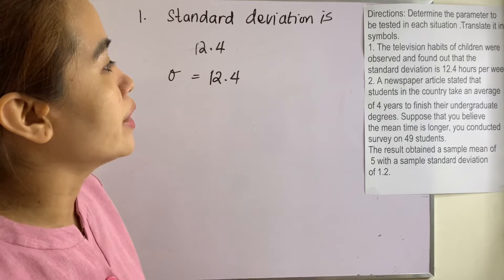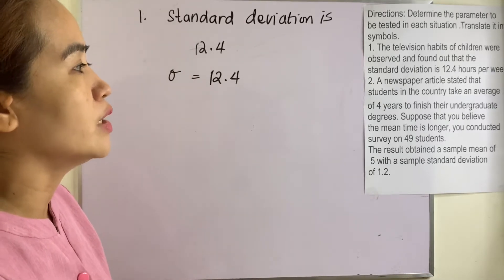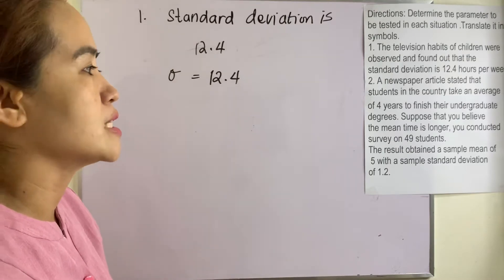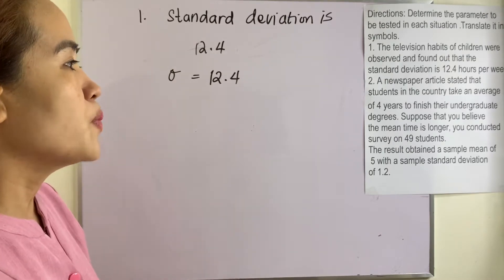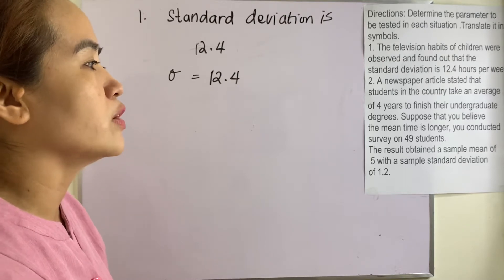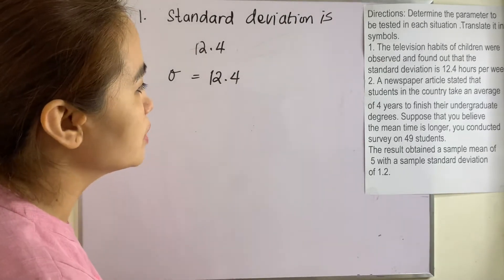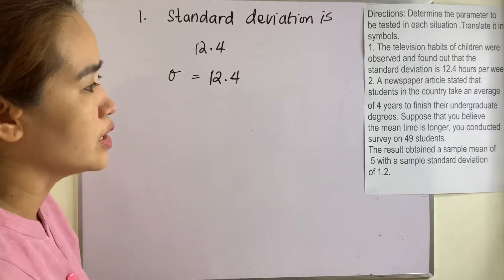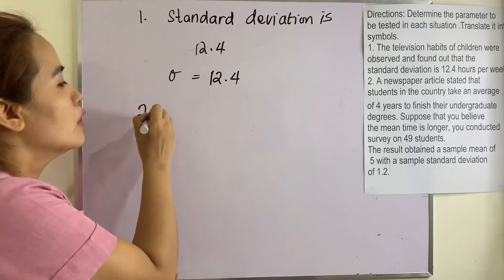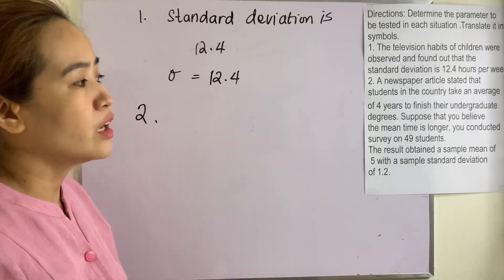Example number two: a newspaper article stated that students in the country take an average of four years to finish their undergraduate degrees. Suppose that you believe the mean time is longer. You conducted a survey of 49 students and the result obtained a sample mean of five with a sample standard deviation of 1.2. Of course, we are not after the sample here.